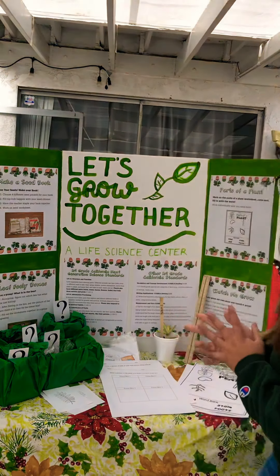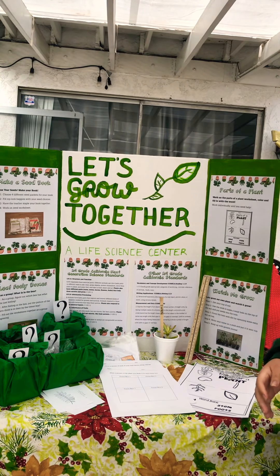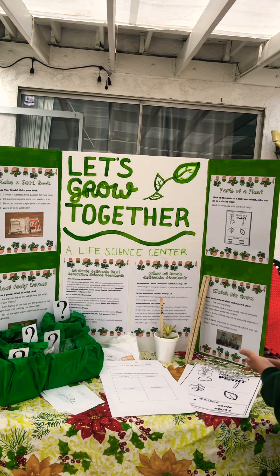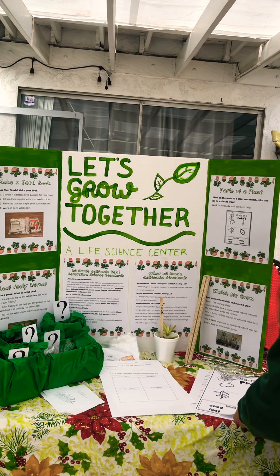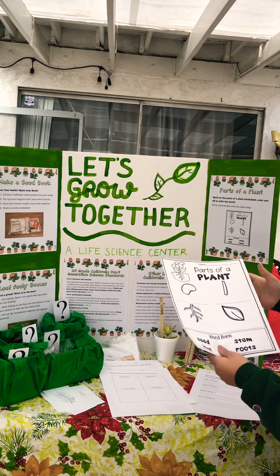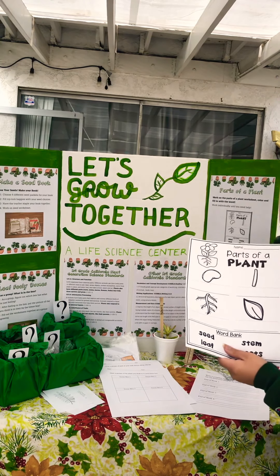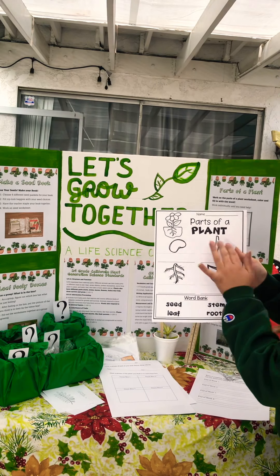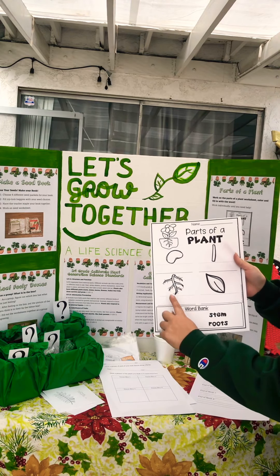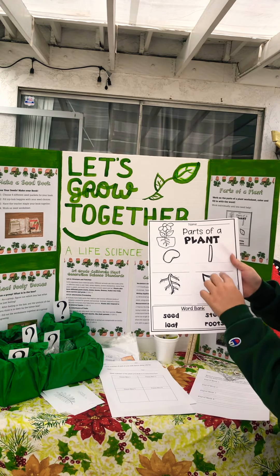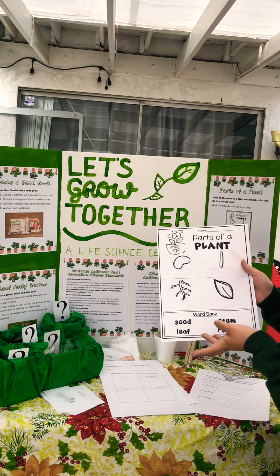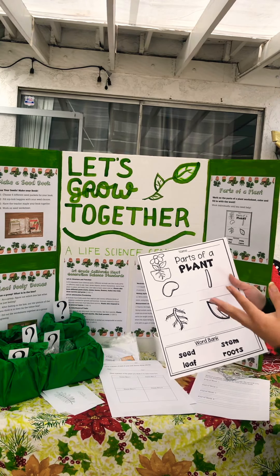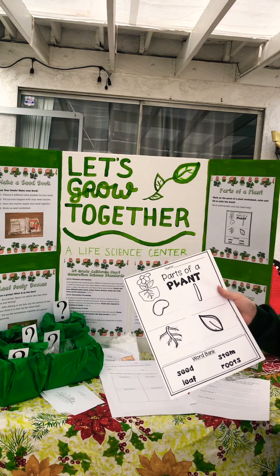The next activity is going to be their exit ticket to go outside, and that's the Parts of a Plant worksheet. This worksheet tests students' understanding of the different parts of a plant — they should be able to look at pictures and determine: that's a seed, those are roots, that's a leaf, that's a stem. They'll work on this individually at first, but if they need help they can ask their peers or me at any time.